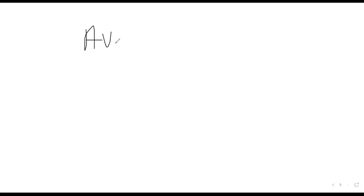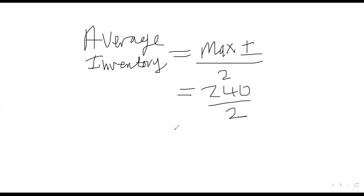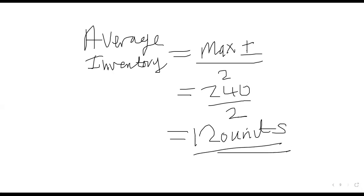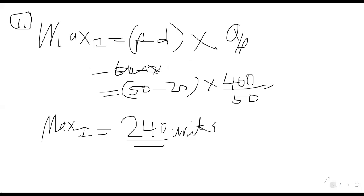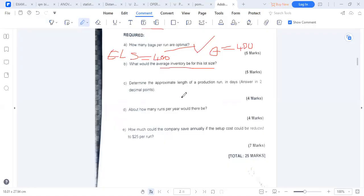Average inventory = maximum inventory divided by 2 = 240 / 2 = 120 units.